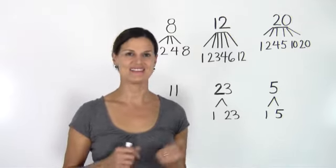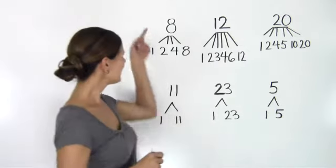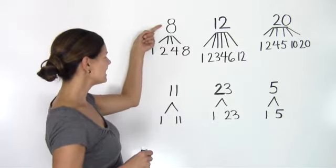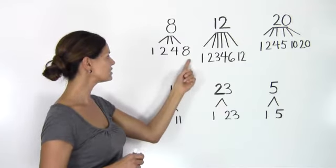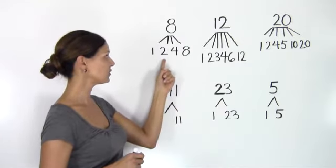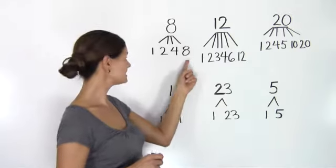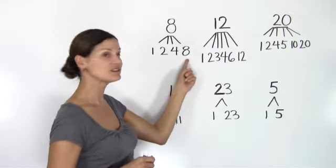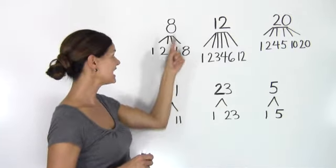So let's take a look at a few examples. If we look at the number 8, we can see that 8 has four factors: 1, 2, 4, and 8. These are whole numbers that divide evenly into 8.